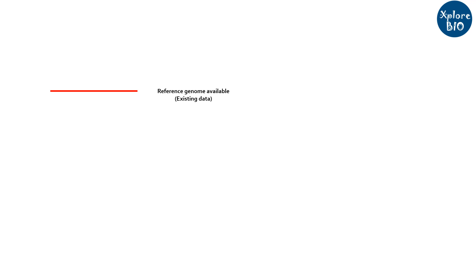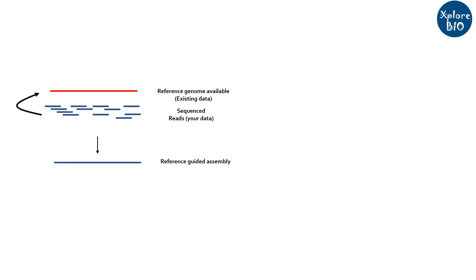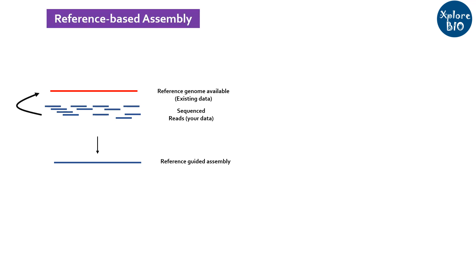When you already have a reference genome sequence of an organism available, you can map the sequence reads generated in your experiment to that already known reference sequence. This is called reference-based assembly.